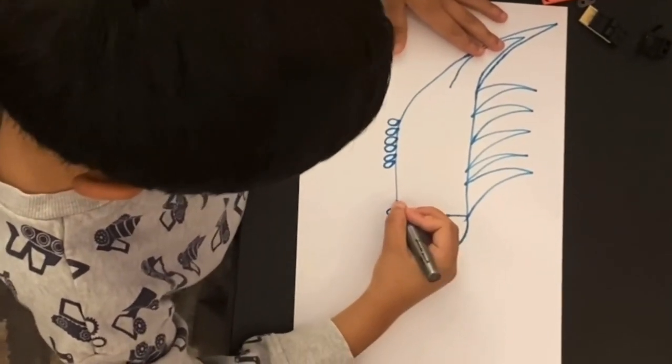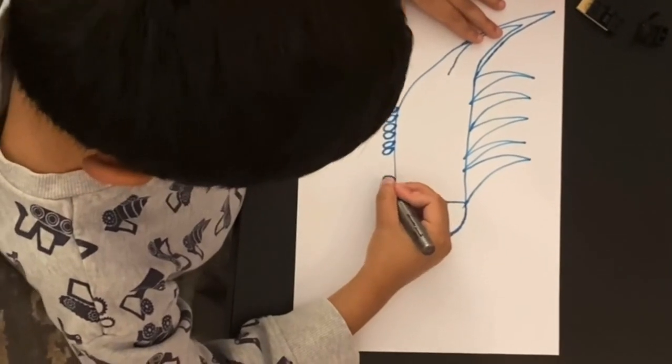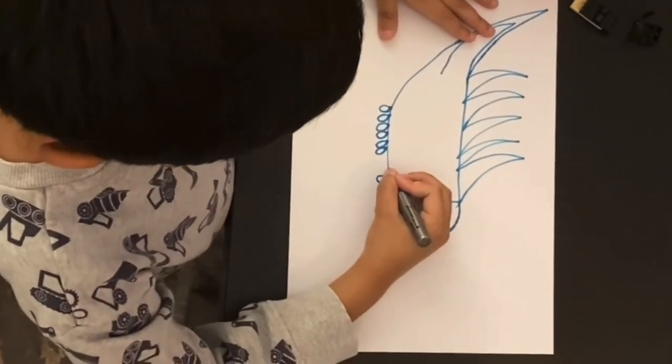His imagination shows that the train has multiple wheels and six fins on the top.